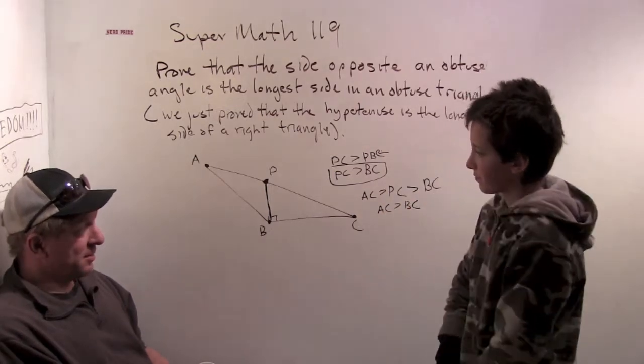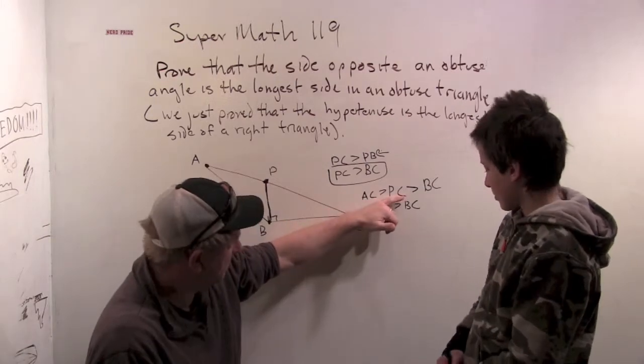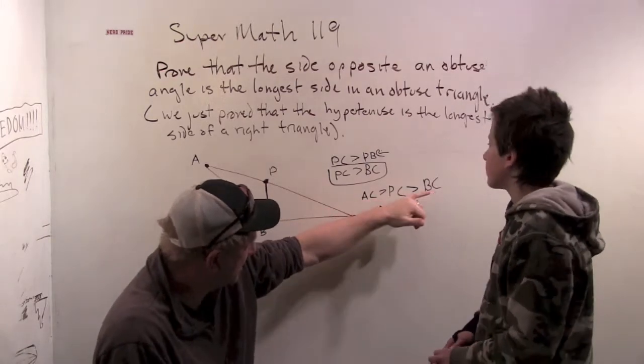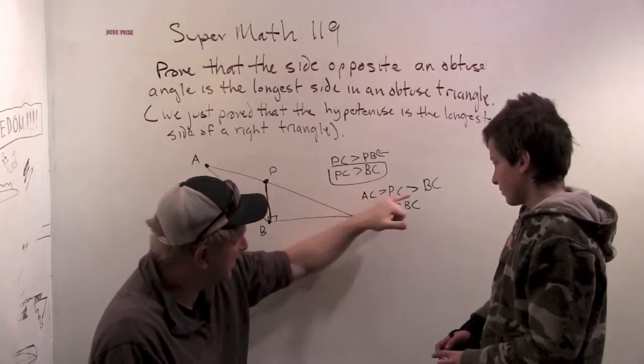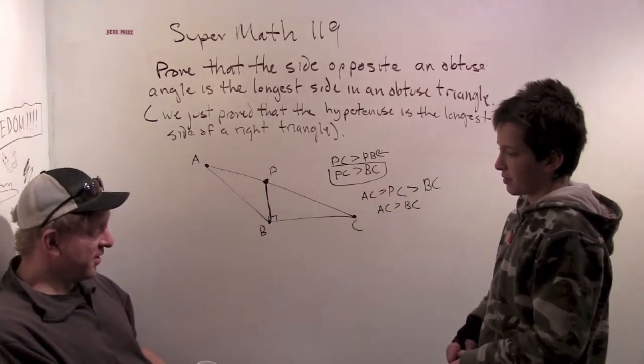And do you remember the name of this property? If I know that AC is bigger than PC and I know that PC is bigger than BC, why do I know that AC is bigger than BC? I think it's the transitive property. That is the transitive property.